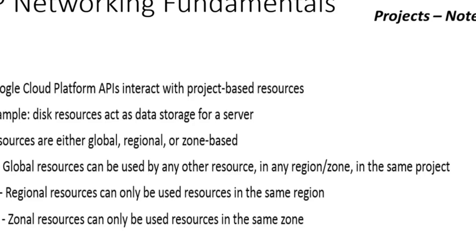A zonal resource might be a resource that can only be located in a zone and can't be moved to another region. An example would be a Compute Engine instance attached with a local SSD or an image attached to a VM — that can't be moved until it's detached from the VM. From a networking perspective, we want to understand the different types of resources that are global, regional, and zonal.